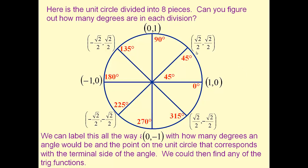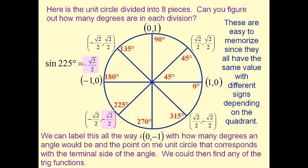We can label this all the way around at 45 degree or π/4 increments. And we can find those values for the x and y coordinates, which wind up being the cosine and sine, respectively. So now we found all the way around the unit circle, the values for the sine and cosine. Sine of 225 degrees, for example, would be down here and have a value of negative square root of 2 over 2.